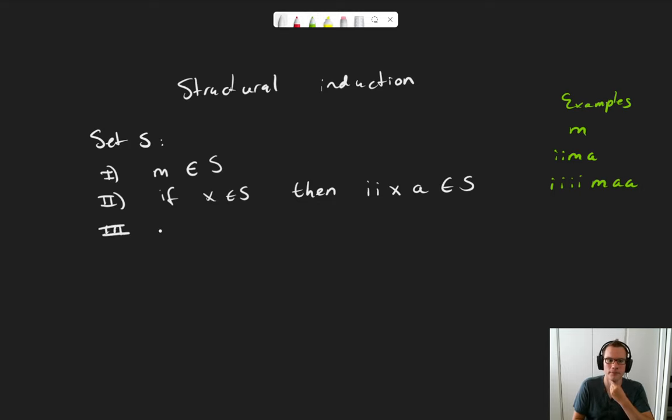All right, let's continue with the third rule. If X and Y are elements of S, then iXAYi is also an element of S. Again, let's look at an example. M and iiMA are both elements of S. So let's take X is M and Y is iiMA and apply the rule. So we get iMAiiMAA. This thing is also an element of S by the third rule. Remember also that X and Y can take the same value. So for example, they both take M as their value. So iMAMi is also in S.